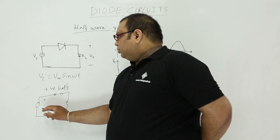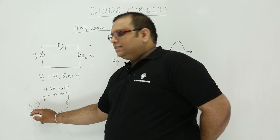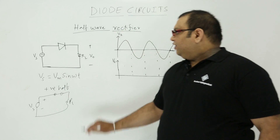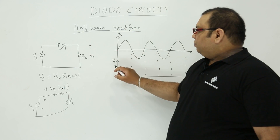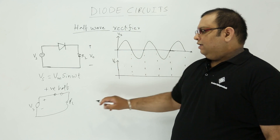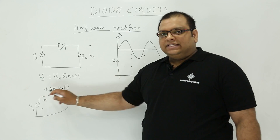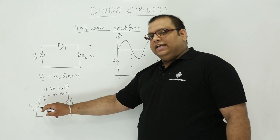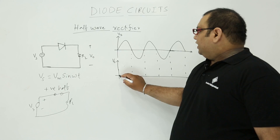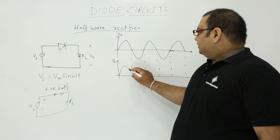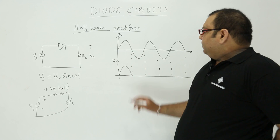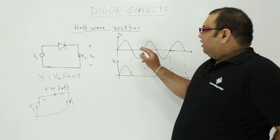In the positive half, whatever voltage you are applying, Vs will appear across RL. So the output voltage V0 during the positive half — as the diode is conducting — the same voltage Vs will appear across RL. This is the output voltage waveform during the positive half.